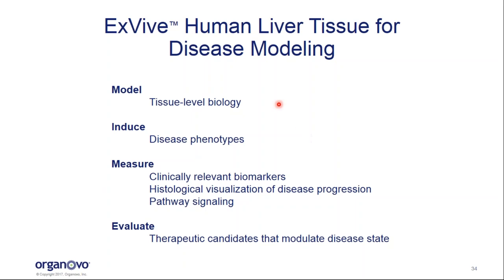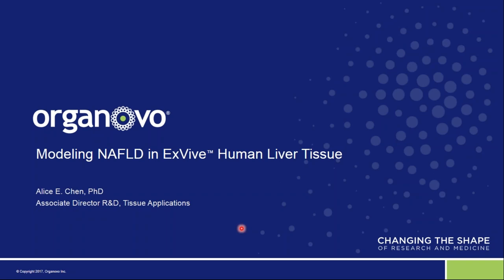To summarize this section: we have the ability with this model to model tissue-level biology and induce disease phenotypes. I talked about an induced fibrosis phenotype that allows us to measure clinically relevant biomarkers, and the histological visualization allows us to look at disease progression as well as mechanistic pathway signaling. What I just showed you is proof of concept to start evaluating therapeutic candidates that can modulate the disease state. And with that, I'm going to turn the presentation over to Alice to share some exciting new data.